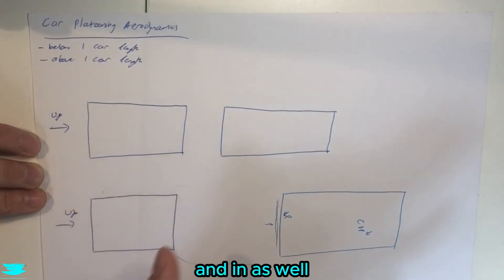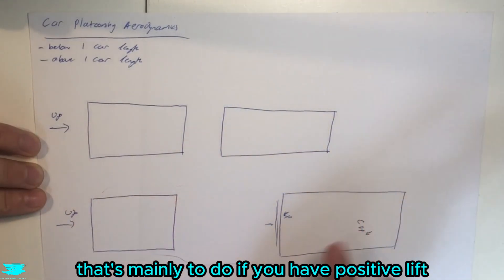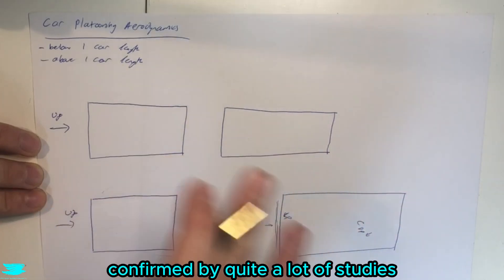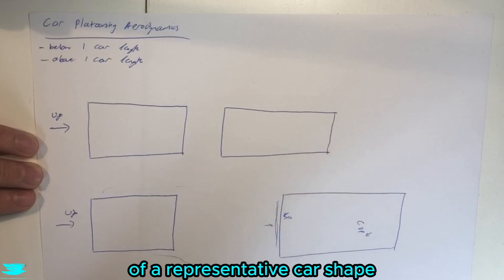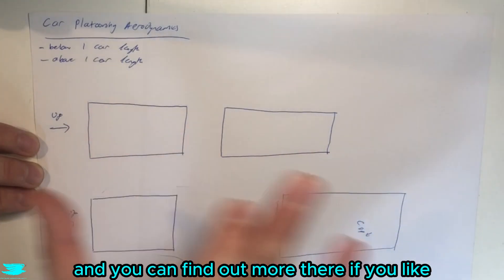And as well, the lift coefficient usually drops as well. That's mainly to do if you have a positive lift, for example, and the results from this are confirmed by quite a lot of studies. For example, one called the effect of vehicle spacing on the aerodynamics of a representative car shape. That's a paper that goes through both of these scenarios, and you can find out more there if you like.